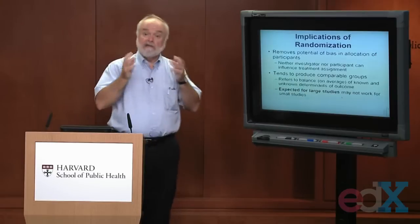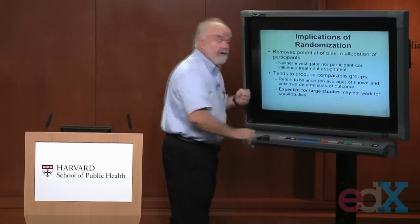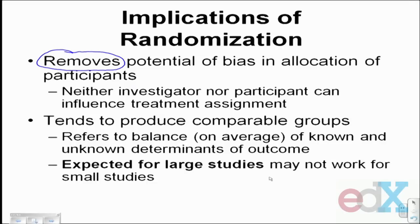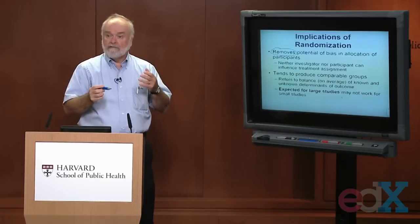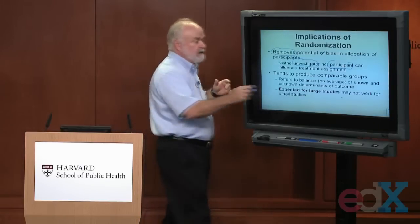One reason we randomize is we want to take out of the treatment decision the role of the patient and the role of the patient's physician. We don't want the sicker people to receive the new treatment or the sicker people to receive the standard of care — that wouldn't be a comparable study. So randomization first removes the potential bias in the allocation of patients to receive a new treatment or a standard of care. Neither the investigator nor the patient nor their physicians can decide, and as a result, randomization tends to give you comparable groups.